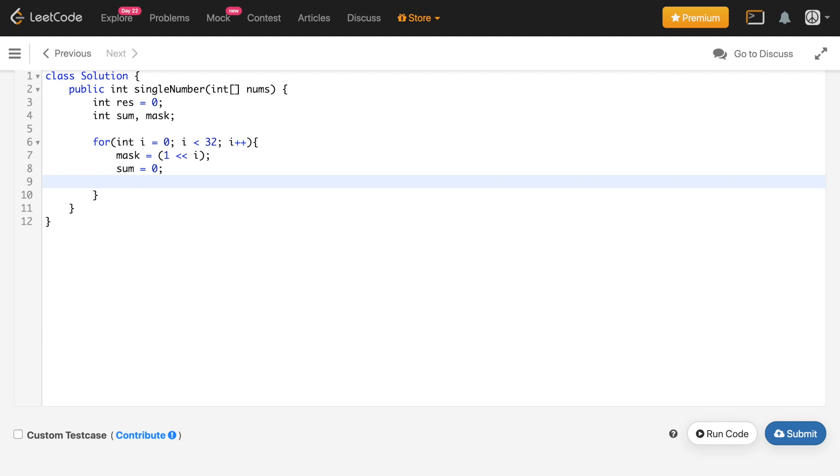Now I'll iterate over the nums that are given to us. So for int n and nums, what I will do is in case n AND mask, in case this value n AND mask, in case this is not equals to 0,